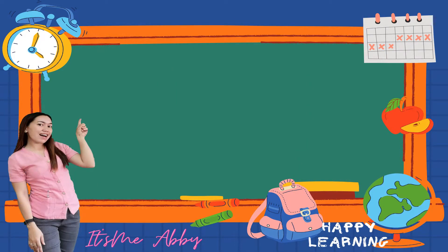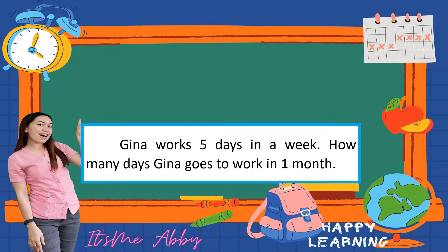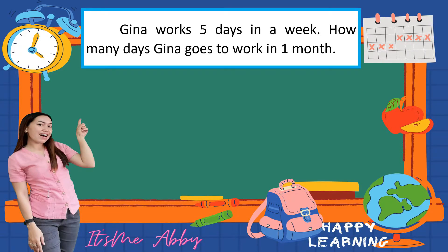365 days is equivalent to one year. I have here one example word problem that involves time measure: Gina works 5 days in a week — how many days does Gina go to work in one month? Here are the procedures or steps on how we are going to solve this given problem.